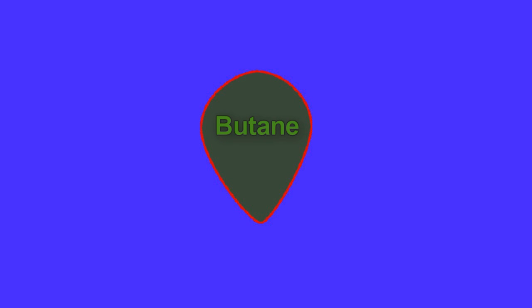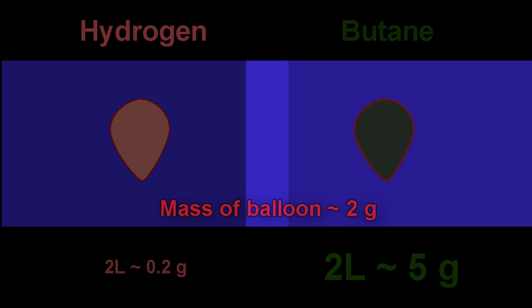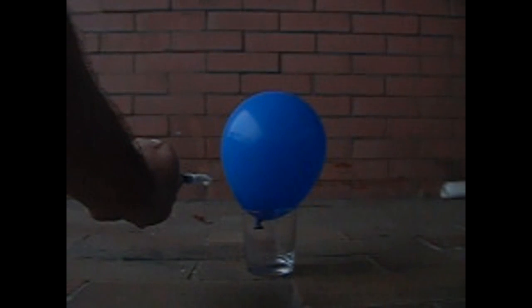Butane weighs about 25 times as much as hydrogen. So 2 liters of hydrogen is about 0.2 grams whereas 2 liters of butane is about 5 grams. Significantly more than the mass of the balloon. So what will happen when the flame touches this baby?